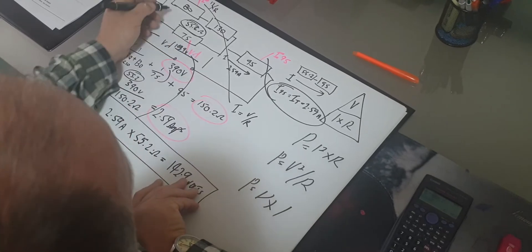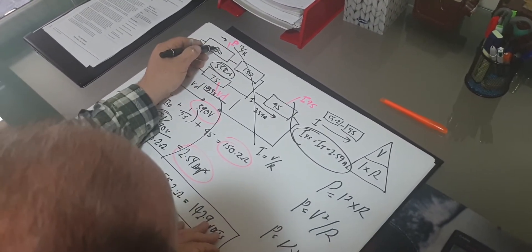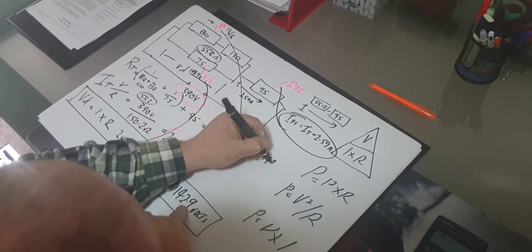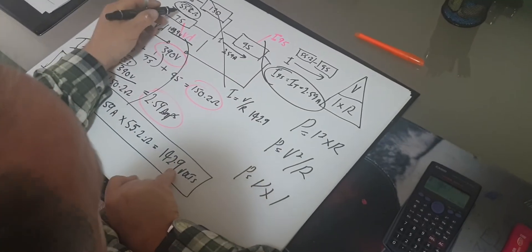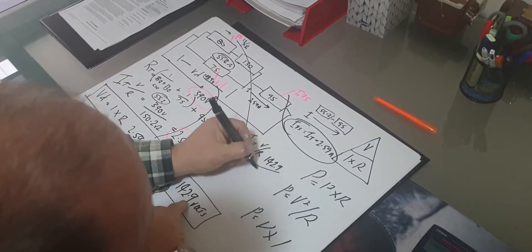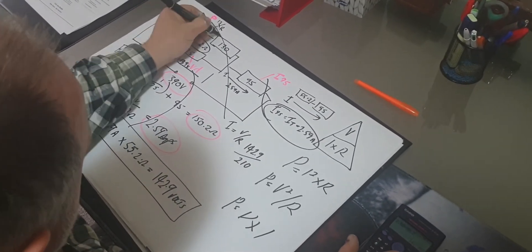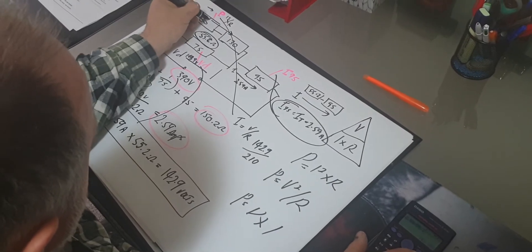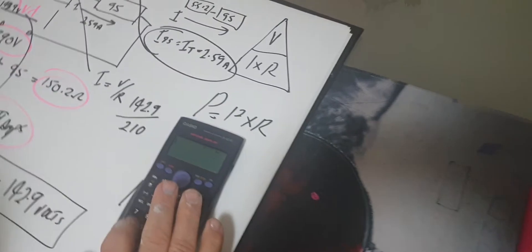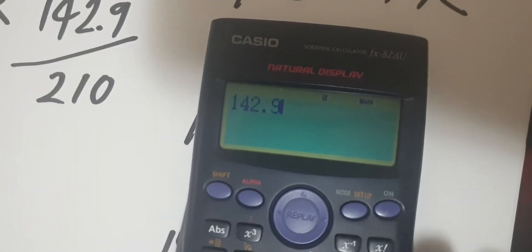So I equals V over R. What's the voltage drop across these two resistors to get that first? It was 142.9, and the resistance I'm going to add those two together. So that was divided by 210, because remember I'm looking for the current that's flowing through both of these resistors. So 142.9 divided by 210 equals 0.68 amps.